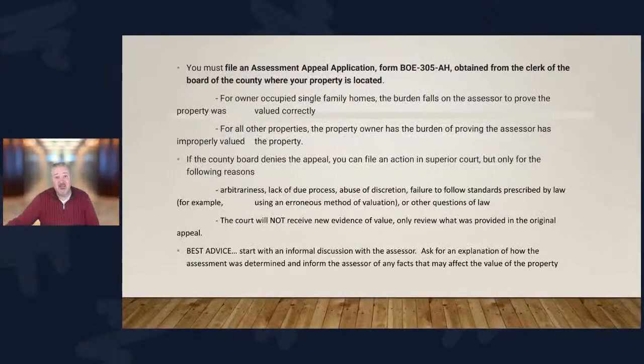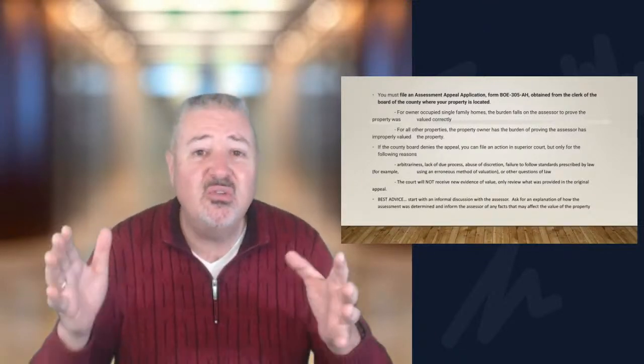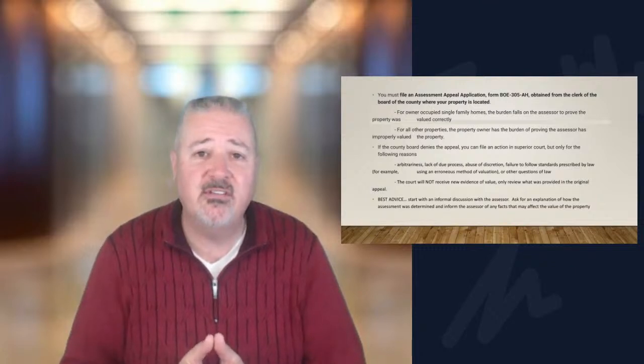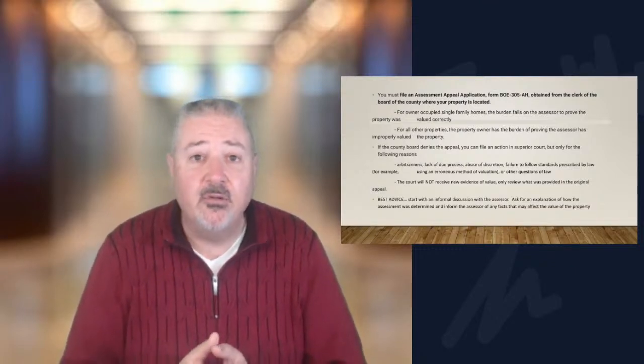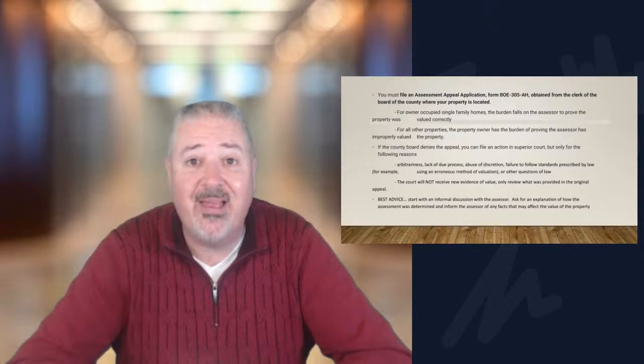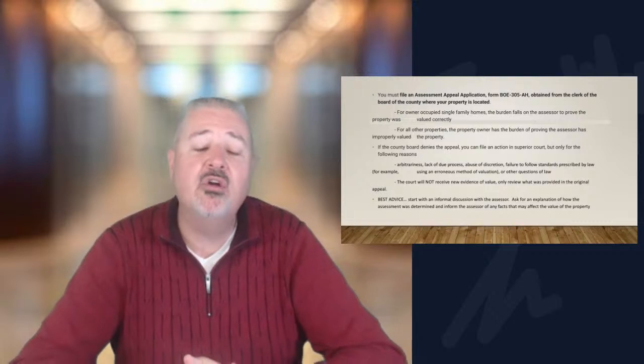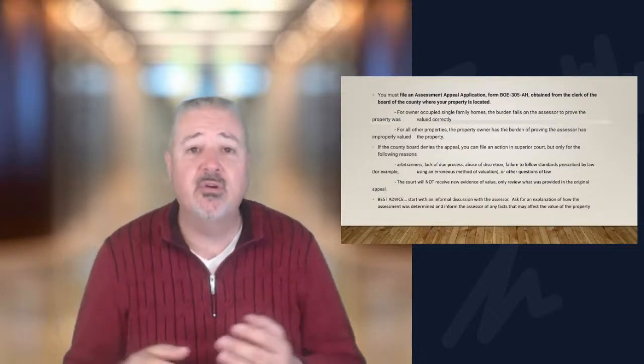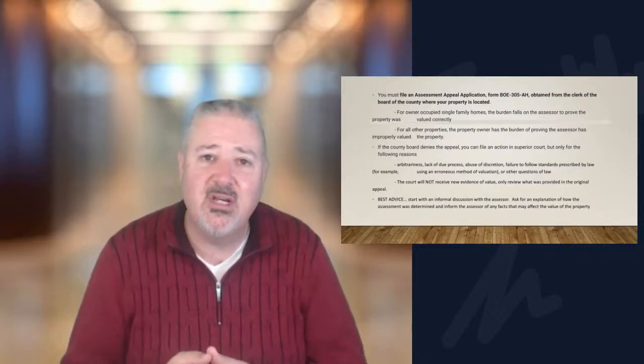They are basically the judge, jury, and executioner of this process. The best advice — which I got from the State Board of Equalization website — is to simply pick up the phone and call your assessor's office for an informal conversation. Say, 'I don't think you valued my home properly. Can you explain how you came up with these numbers?' A lot of the time the assessor's office will simply adjust the number for you without going through the formal appeal process, because they don't want to bring a whole bunch of appeals in front of the board of supervisors.